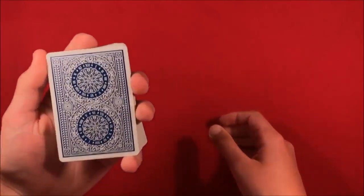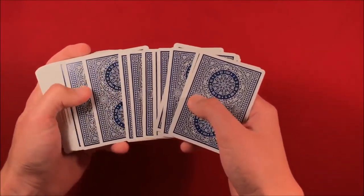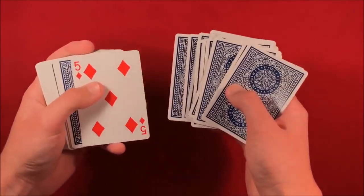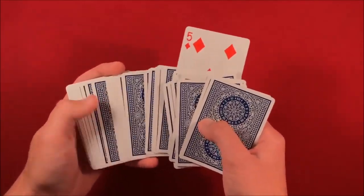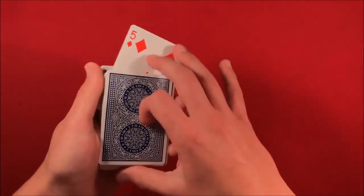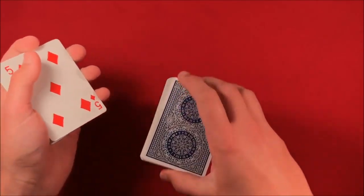So then you can go like this. You can say, okay, let's go ahead and see where your card is. And you slowly spread through and you say, okay, look, there's only one card in the deck that seems to be face up. And you kind of play it off like this is their card.